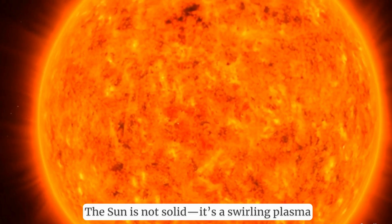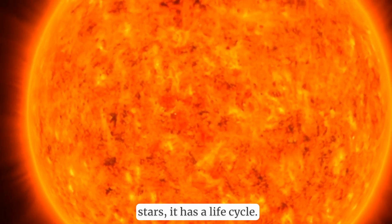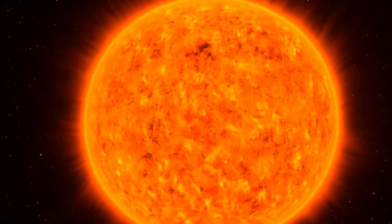The Sun is not solid. It's a swirling plasma furnace, held together by gravity. And like all stars, it has a life cycle. But here's the twist: stars like the Sun don't actually explode in the way giant stars do.